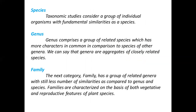Taxonomic study considers a group of individuals or organisms with fundamental similarities as a species. Where there are fundamental similarities, we are talking about species. As modern taxonomy adds evolutionary relationships, there are more similarities within a species. As we go further up the hierarchy, the similarities compared to species decrease. The genus is a group of related species. Species are grouped into genus, and the plural of genus is genera.